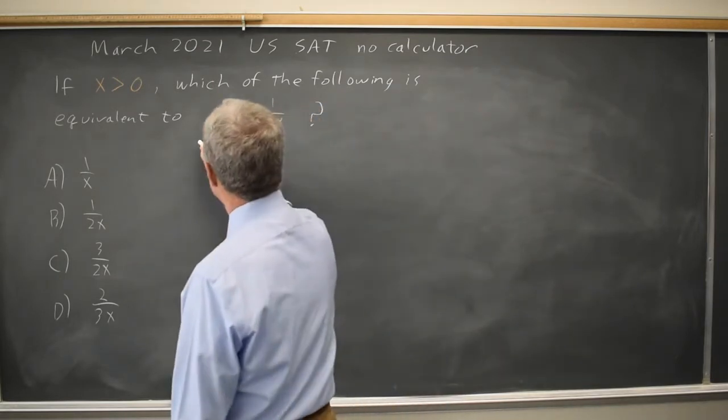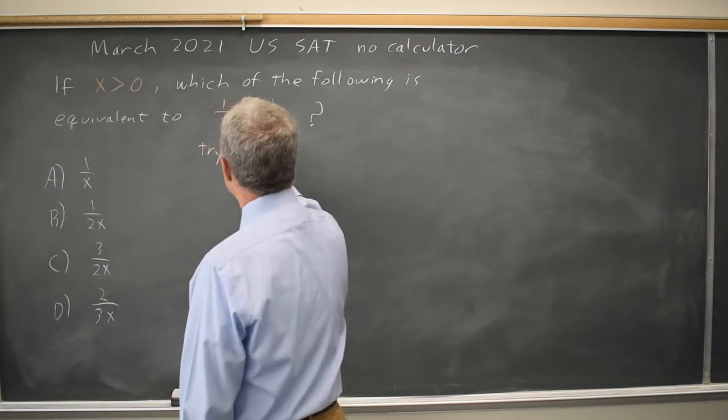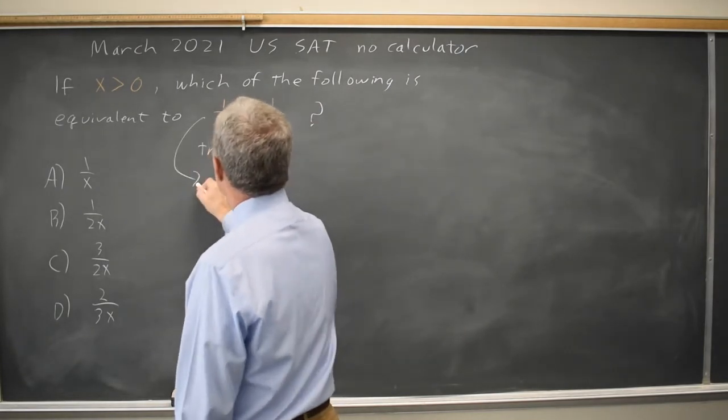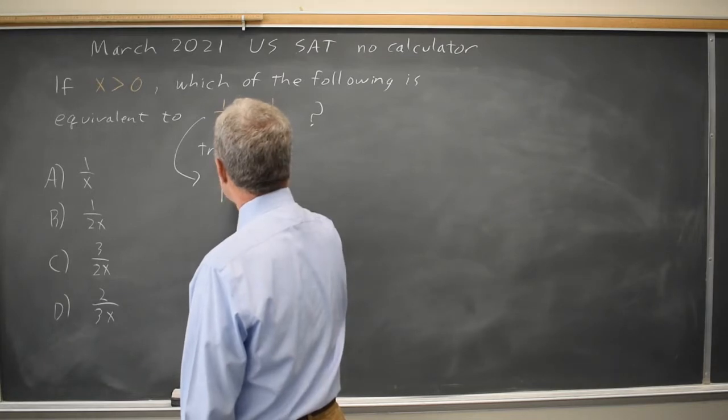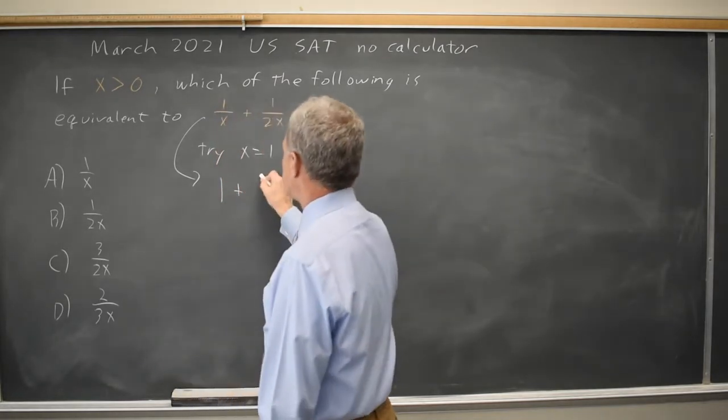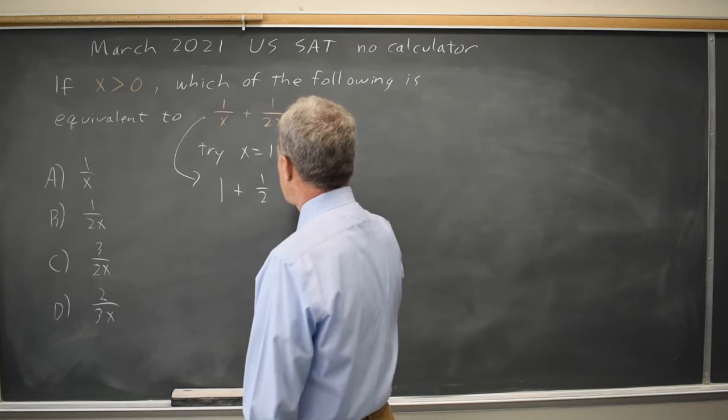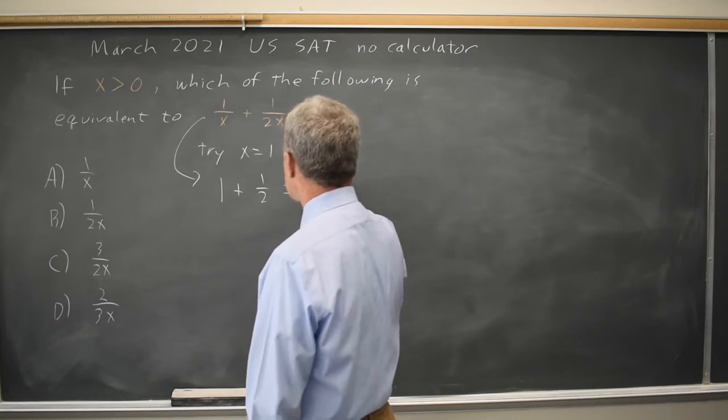So if I try x equals 1, 1 over x is 1 over 1 is 1. 1 over 2x is 1 over 2 is 1 half. And that's 2 halves plus 1 half is 3 halves.